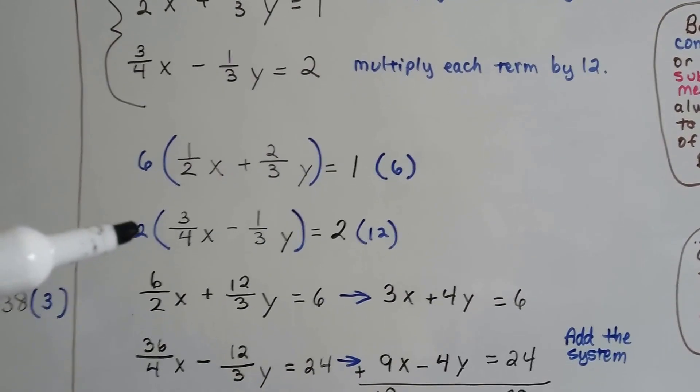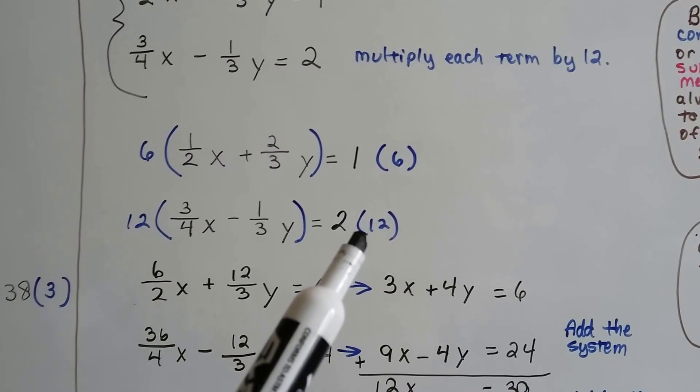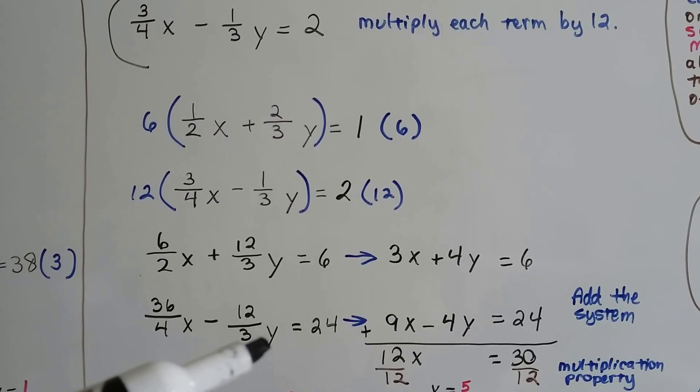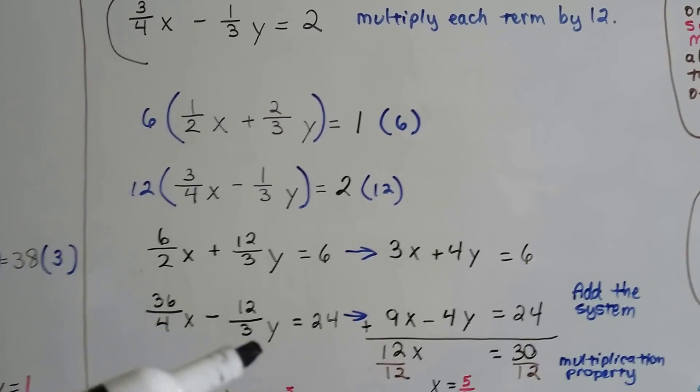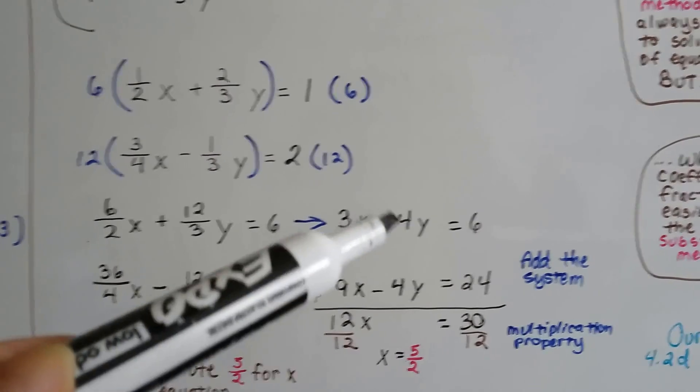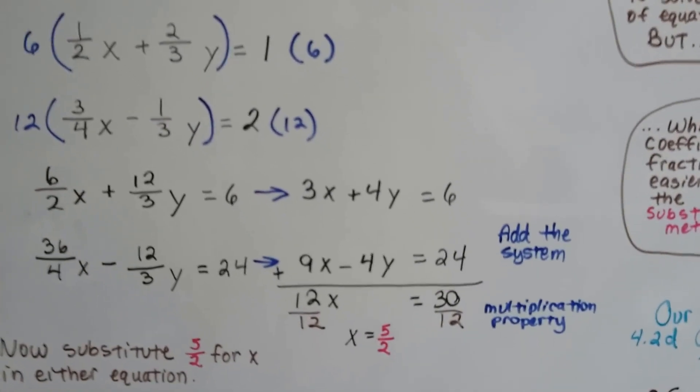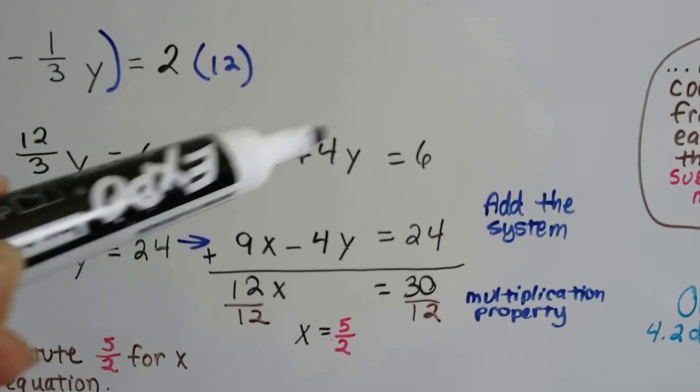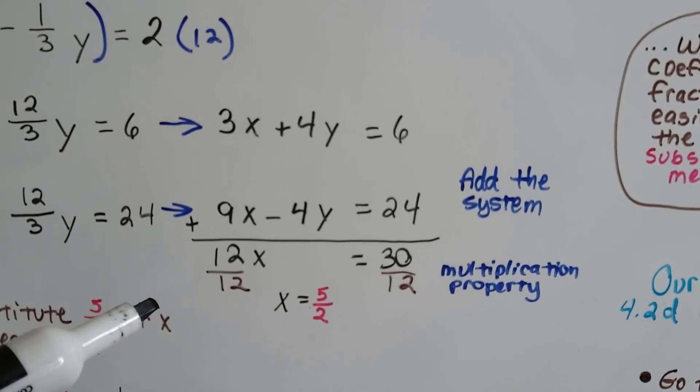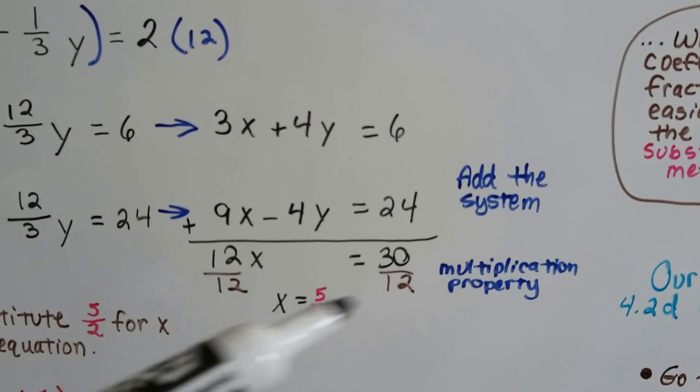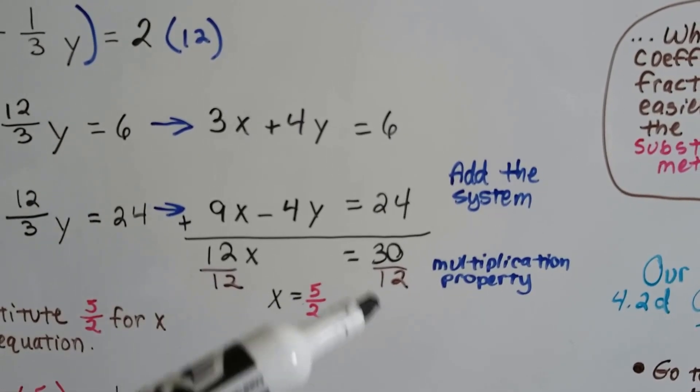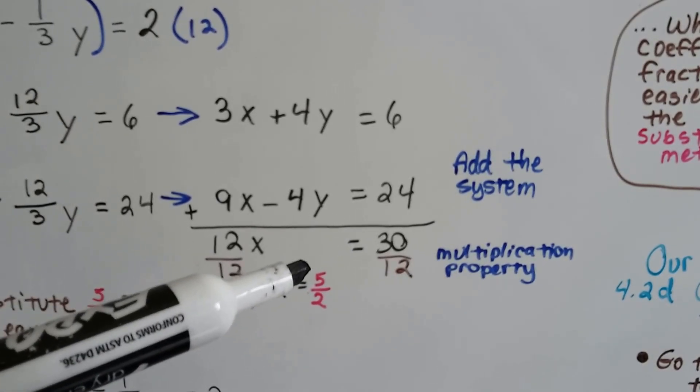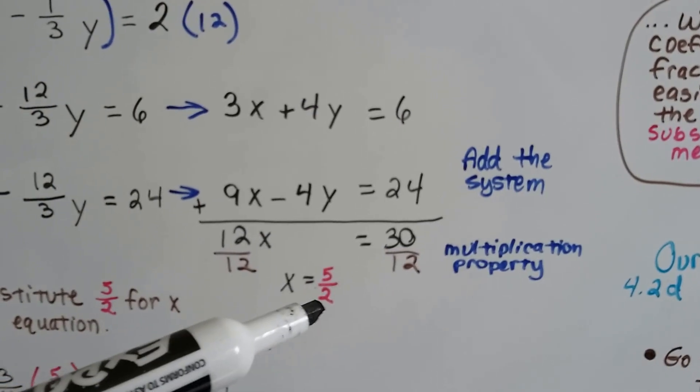We can multiply each term here by the 12, and we distribute this 12 in to each one of these. We get (36/4)x - (12/3)y = 24, and that simplifies to 9x - 4y = 24. Now we can add the system. Look, we have a zero pair right here, +4y - 4y. That was convenient. So now we've got, when we add them together, 12x, and this was eliminated, and 24 and 6 is 30. So we have 12x = 30. Multiplication property says we can divide each term on each side by this coefficient 12. That creates 1x, and 30 over 12 simplifies to 5/2. 6 can go into 30 five times, and 6 can go into 12 two times. So we have 5 over 2.